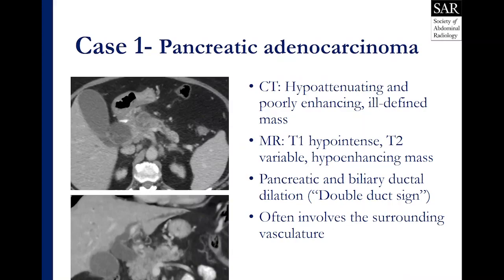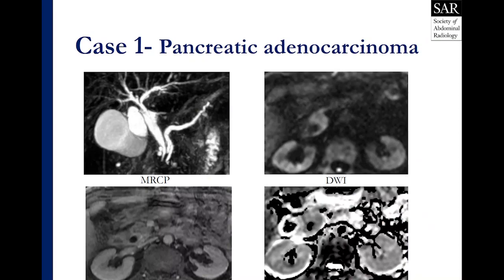Some lesions, namely those in the pancreatic head and uncinate process, will have pancreatic and biliary ductal dilation — the classic double duct sign. This lesion often involves the surrounding vasculature, and so evaluating these lesions can be very tricky because you have to evaluate the vessels one by one to make sure you're describing them adequately for our clinicians and surgeons.